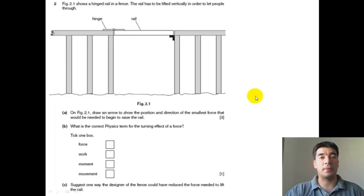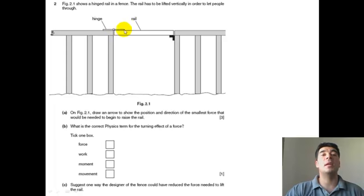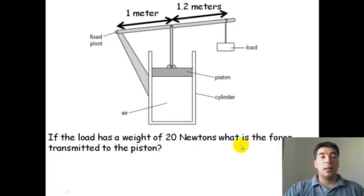Pause the video and read this question. So, it's asking us where we might draw an arrow to show the position where the force to raise the rail would be lowest. First, you must recognize that this is the pivot. The hinge is the pivot. So, you want to make the distance between the pivot and where you're applying the force, the horizontal distance between the pivot and the force, as large as possible. So, placing it right at the end. And what is the correct term in physics for the turning effect of a force? It is the moment.